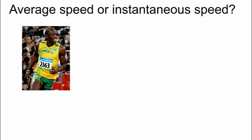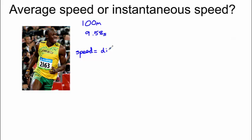It's also important to note the difference between average speed and instantaneous speed. This is Usain Bolt. In 2009 he ran 100 metres in a time of 9.58 seconds. To calculate average speed we simply say that speed equals distance over time. In this case 100 divided by 9.58, giving us an average speed of 10.4 metres per second.